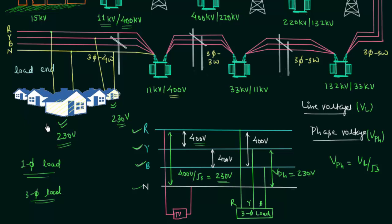Sometimes there is no power at your home but there is power at your friend's home. This is because your house is connected between red and neutral while his house is connected between yellow and neutral. If the red phase fuse is blown, there will be no power at your house, but your friend's house will still have power because his fuse is intact.